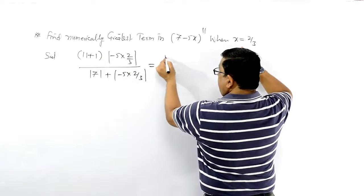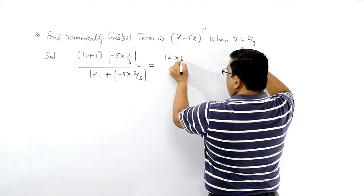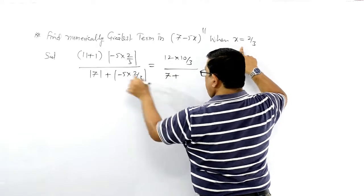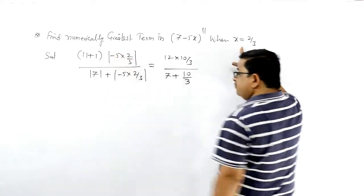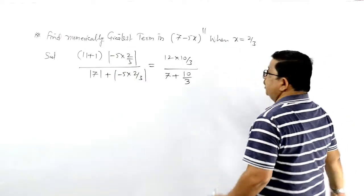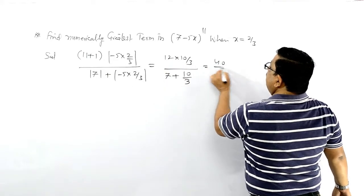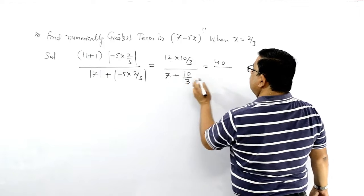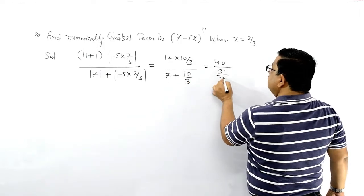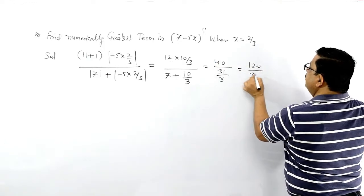यह value निकालते हैं — 12 आ रहा है। 12 into (10/3) divided by (10/3) — यानी 7 + 10/3 को solve करने पर, numerically positive values लिखेंगे। तो यह 3, 4, 12 से 40 होगया। 21 + 10 = 31, so 31/3। तो ultimately 4 * 120 / 30, यानी 120 by 31 बन रहा है।